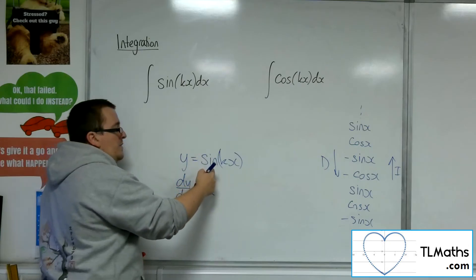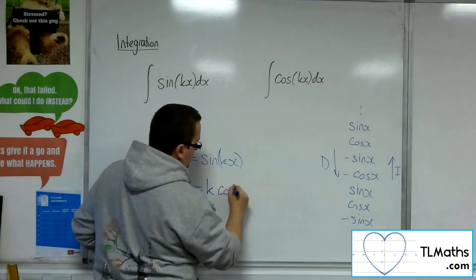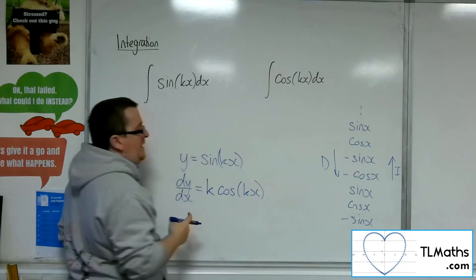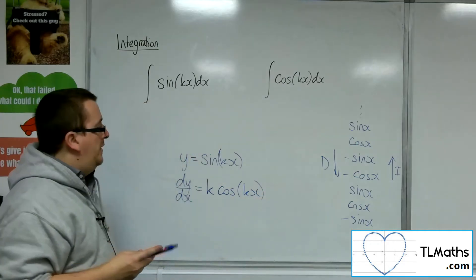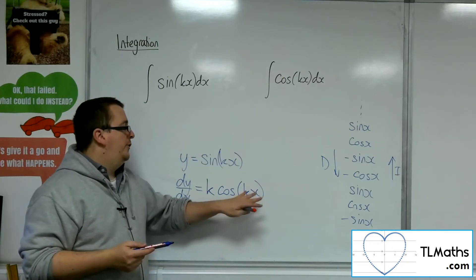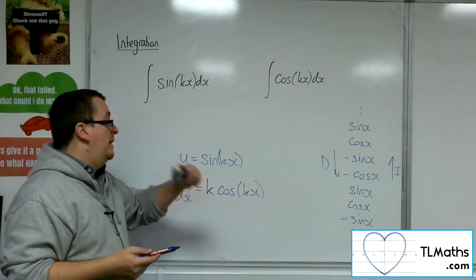I differentiate the sine to cosine, and what's inside that bracket stays as is. So we have k cosine of kx, k times x.